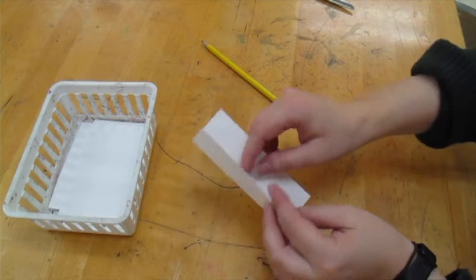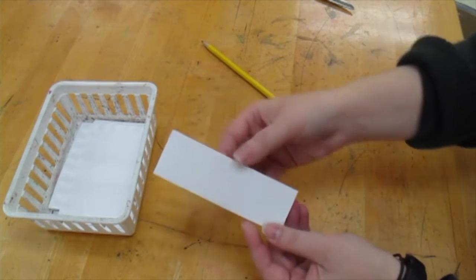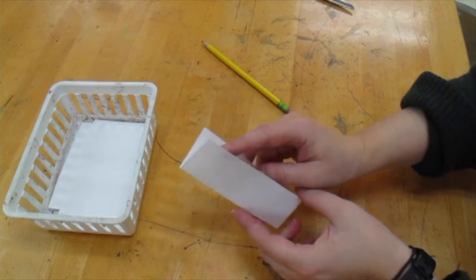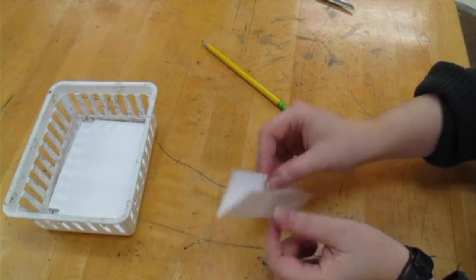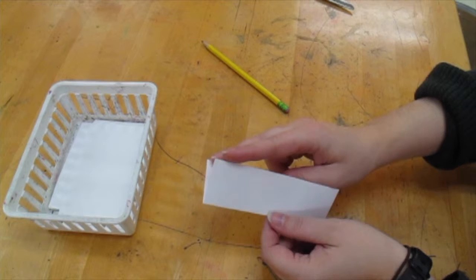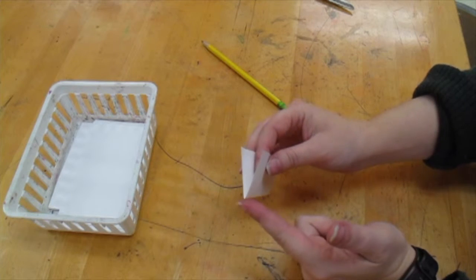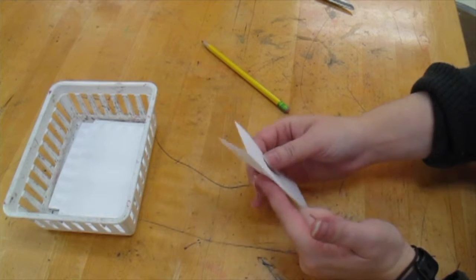Now there's two sides to this rectangle that I've made. One side that's open and has a mouth, those are the edges, and one side that has a fold where the paper comes together.